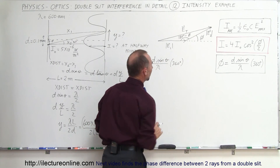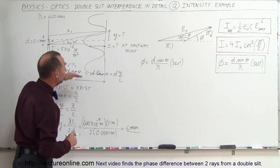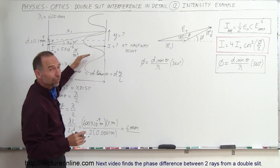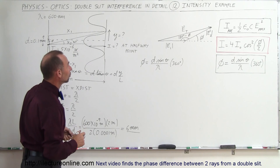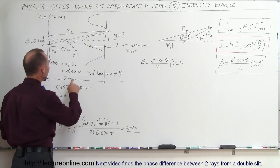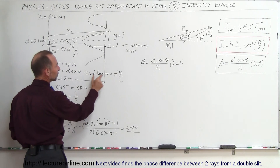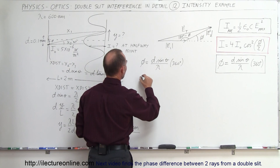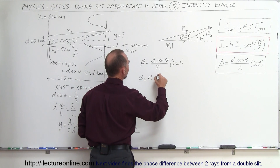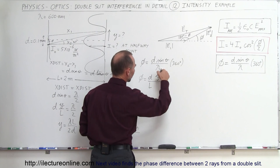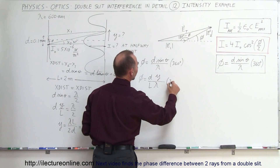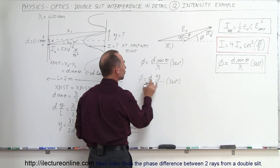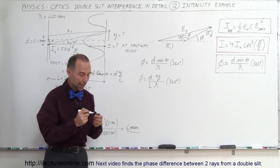So there'll be a fraction of 360 degrees — the halfway point will probably be 90 degrees. Let's find out. We don't have sine of theta, but for small angles sine of theta equals tangent of theta, which equals y over l. So the phase difference equals d times y divided by l, divided by lambda, times 360 degrees. We can find the phase difference in terms of y over l rather than sine of theta.